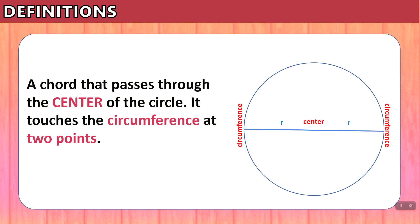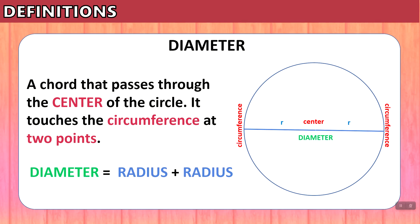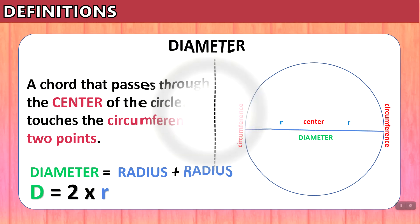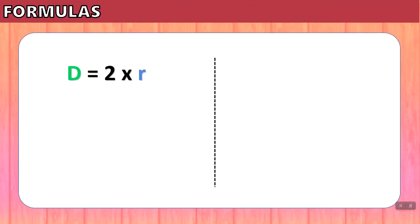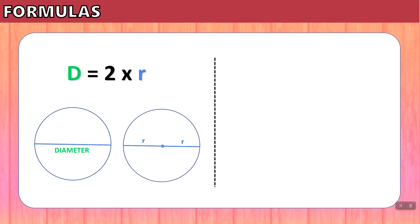We can see now that this line, even though there are two radii, they look like a line segment we learned called the diameter, which is a chord that passes through the center of the circle and touches the circumference at two points. This looks like a diameter, but it really is made up of two radii. The diameter then is a radius plus a radius, and another way to say that is the diameter is equal to two times the radius. So we have a formula: D equals two times R, which means the diameter is made up of two radii.